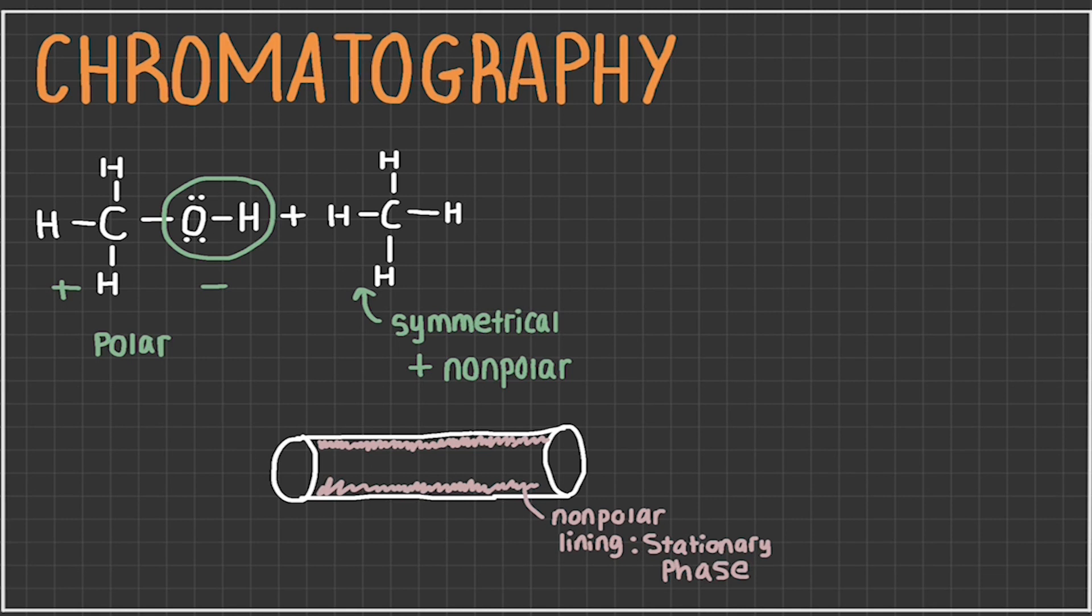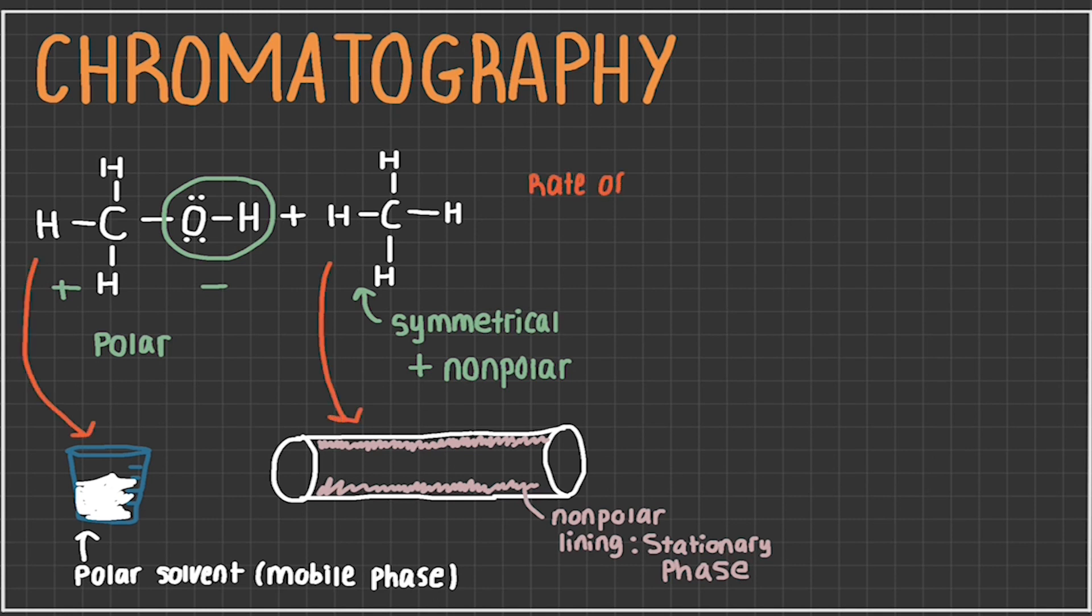Then a mixture is dissolved into a polar solvent. This is the mobile phase, because the substance that is most attracted to it will continue moving down and through the column without being hindered. The nonpolar CH4 will be most attracted to the nonpolar lining, ending up in the stationary phase, and the CH3OH will be most attracted to the polar solvent, being in the mobile phase.